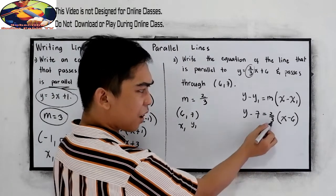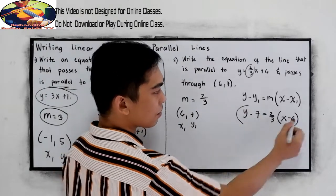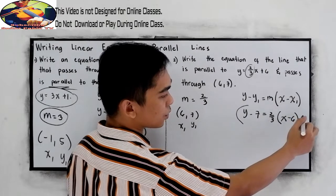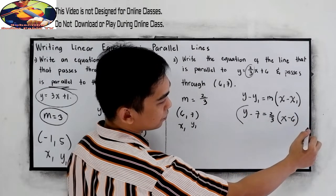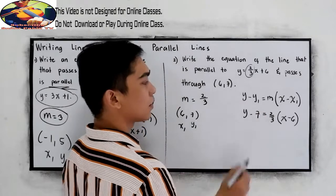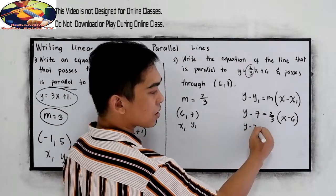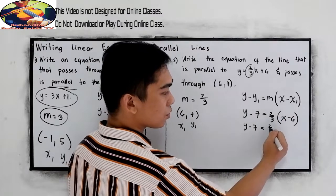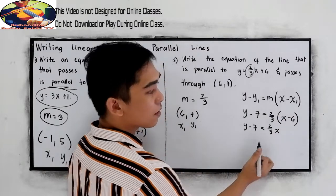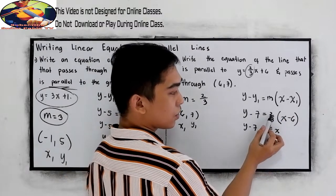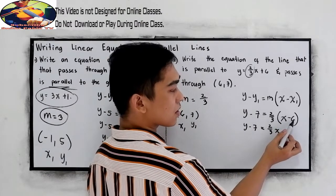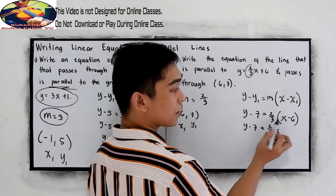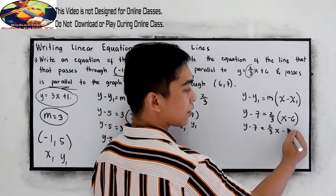Let us remove our denominator. So we just copy y minus 7 is equal to, distributing, 2 over 3x. Now we have 2 times negative 6, that is negative 12 divided by 3, which is negative 4.